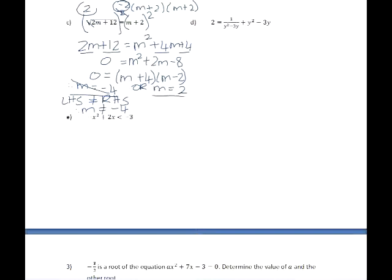If you substitute 2 into the equation, 2 times 2 is 4, add 12 is 16, square root of 16 is 4, and 2 + 2 is 4. So m equals 2 is a valid solution. The left-hand side does equal to the right-hand side.